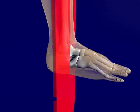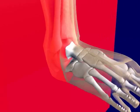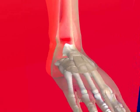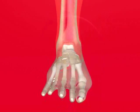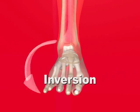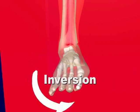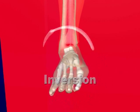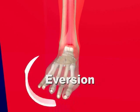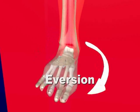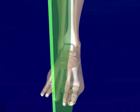The frontal or coronal plane divides the foot into anterior and posterior portions. Inversion and eversion are the motions that occur parallel to this plane. Inversion is when the plantar surface of the foot rotates toward the midline of the body, and eversion is when the plantar surface of the foot rotates away from the midline of the body.